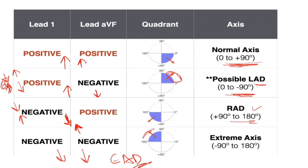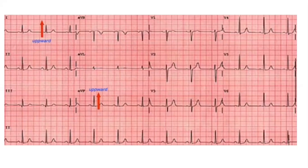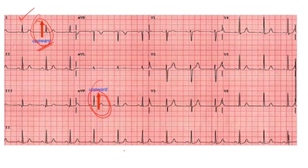I will share this image in the group as well. Now see this is the normal axis — here is Lead I, the arrow is showing upward, QRS complex is upward. And looking at AVF, it is also upward. So this is the normal axis.